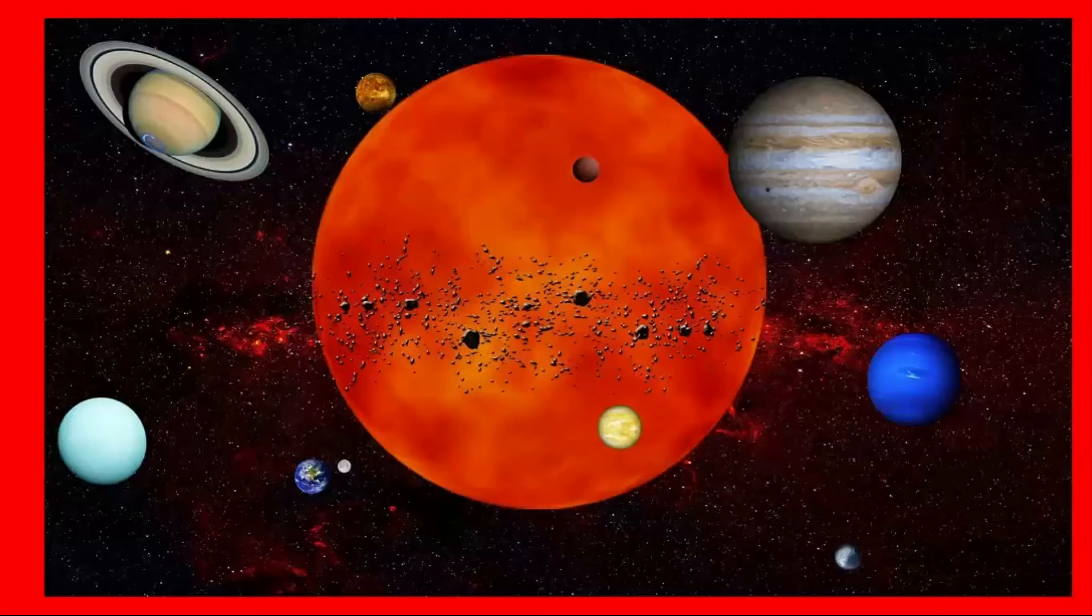A planet is a large sphere of rock or gas that moves around the sun. The planets orbit or move around the sun.